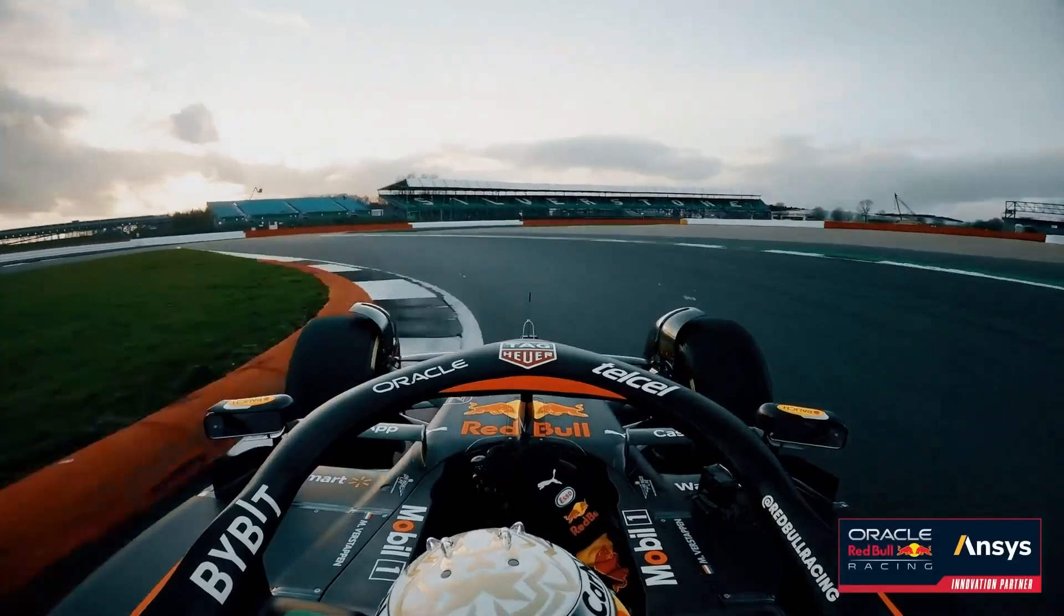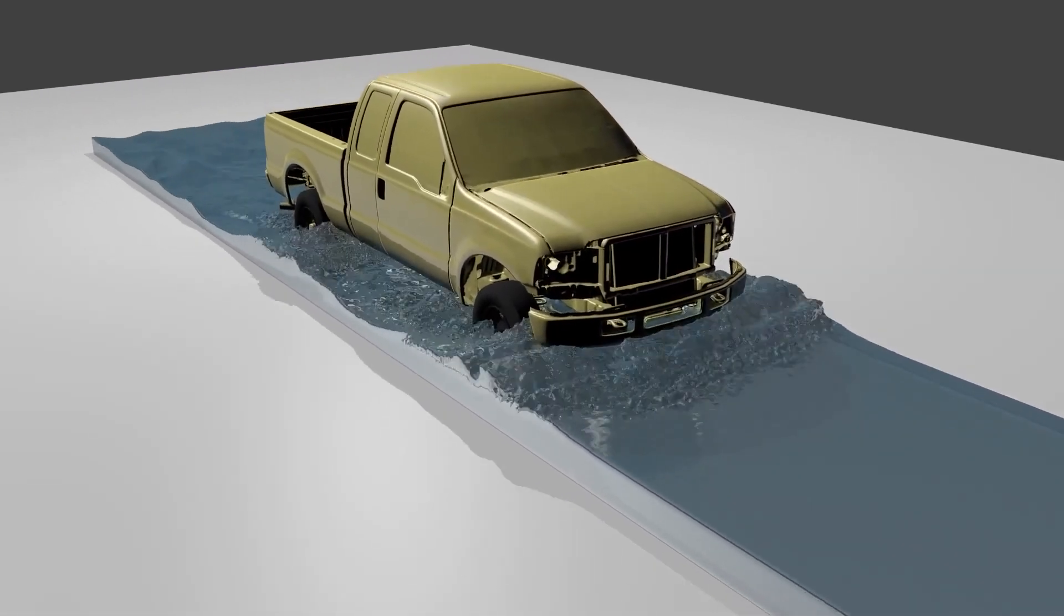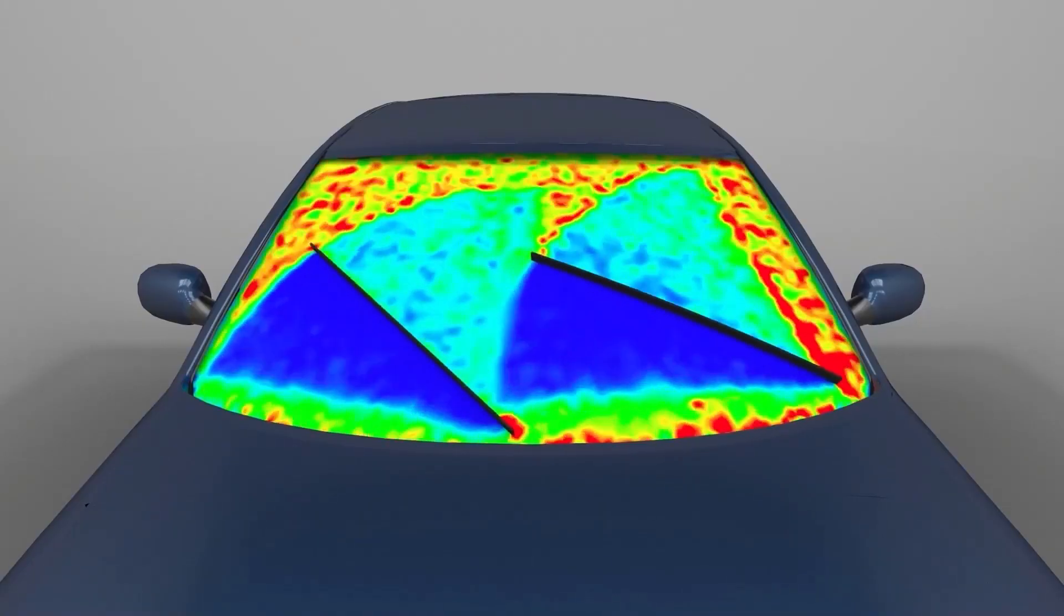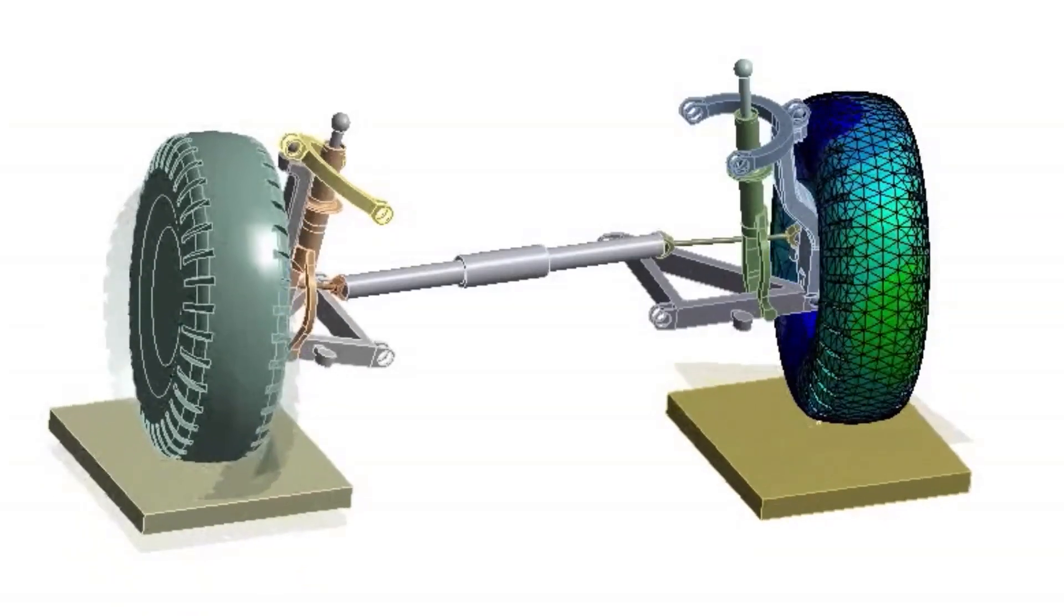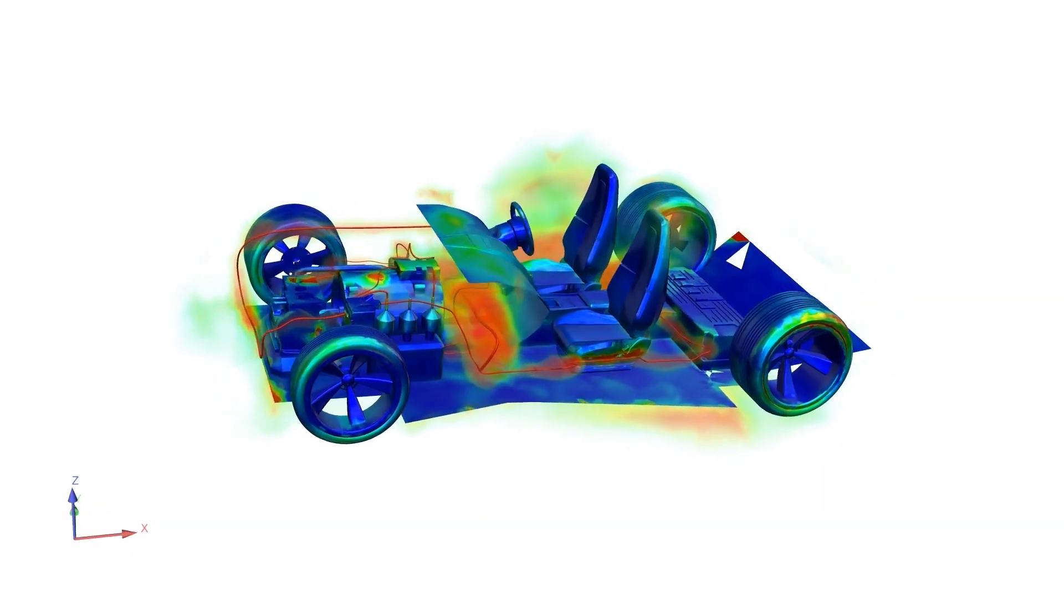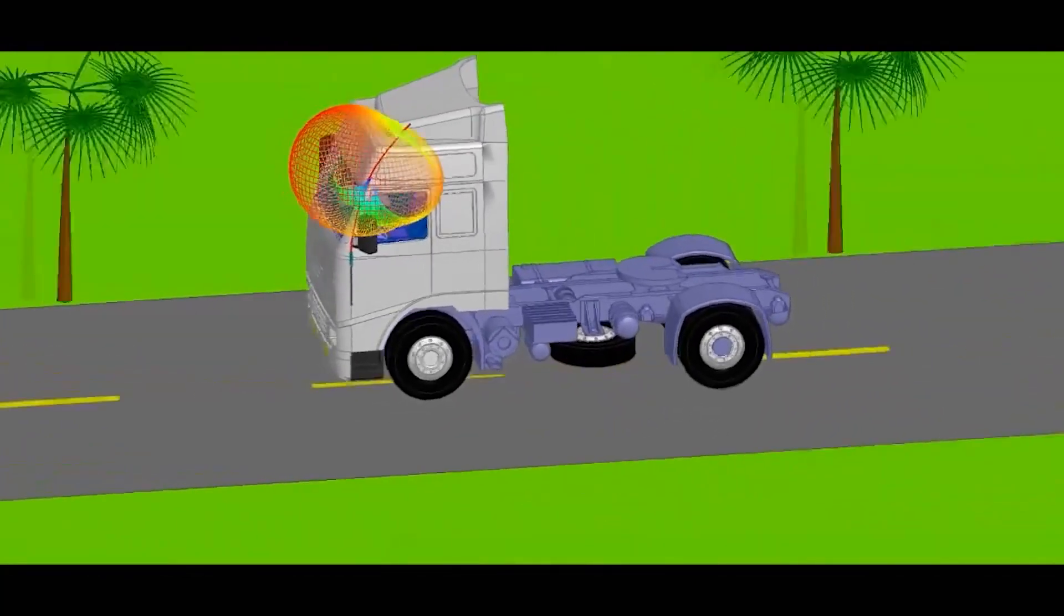There has always been a trade-off between speed and accuracy, but when it comes to simulation, the use of AI/ML with GPUs is providing the best of both worlds. By augmenting simulation methods with AI/ML, we have seen over a 40 times speed increase on some applications.